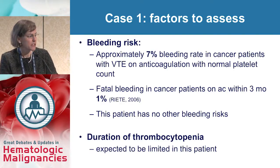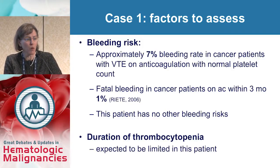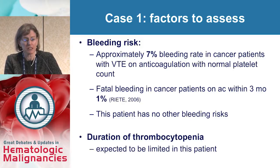Now we need to look at bleeding risks. Approximately 7% of cancer patients will bleed while on anticoagulation with a normal platelet count. Fatal bleeding in the Spanish Registry study was 1% within three months of starting anticoagulation. This patient, however, has no other known bleeding risks, and most importantly, the duration of thrombocytopenia is expected to be limited — he's recovering from auto stem cell transplant and we expect him to engraft his platelets soon.